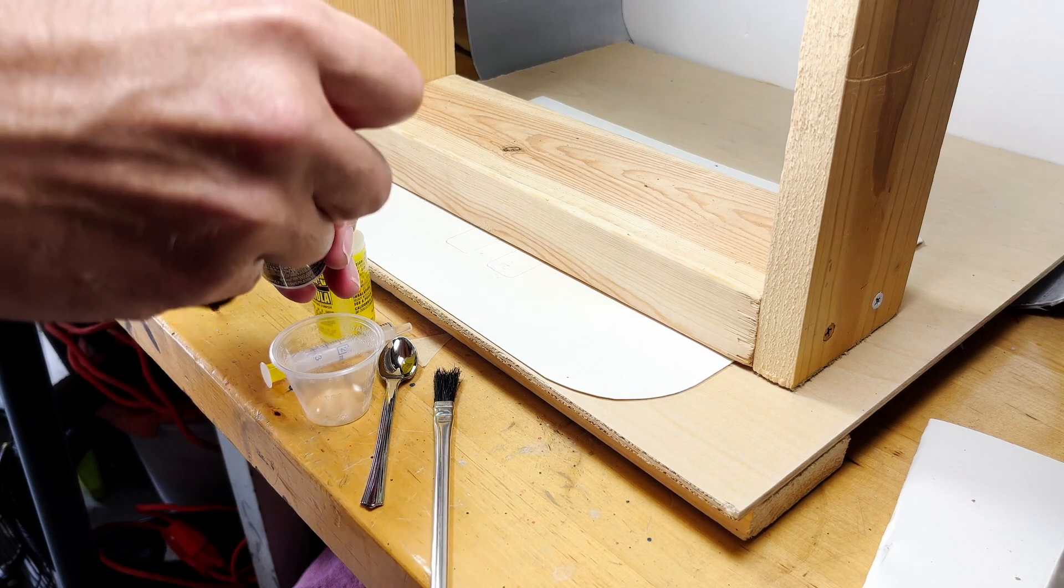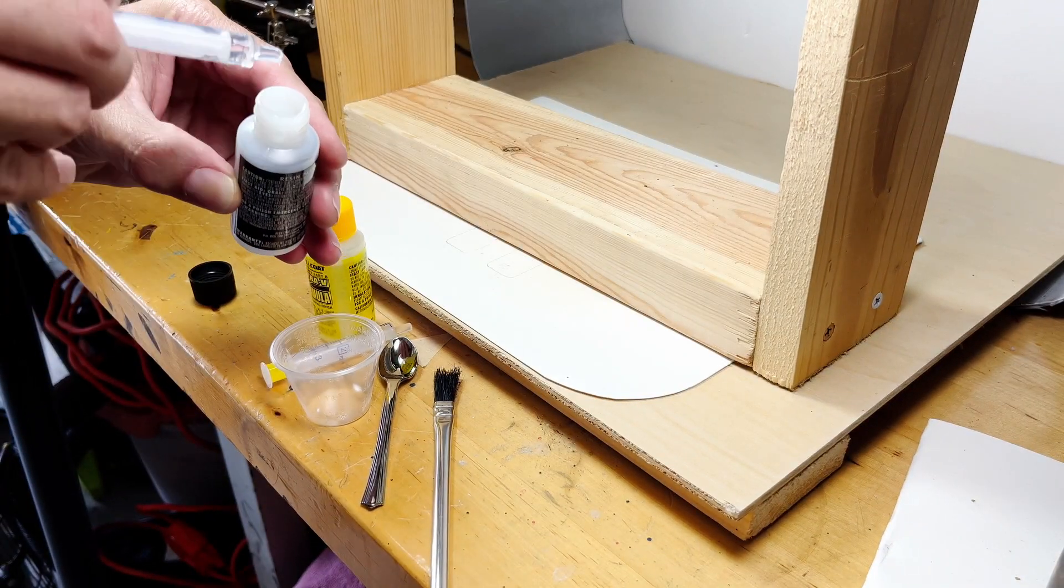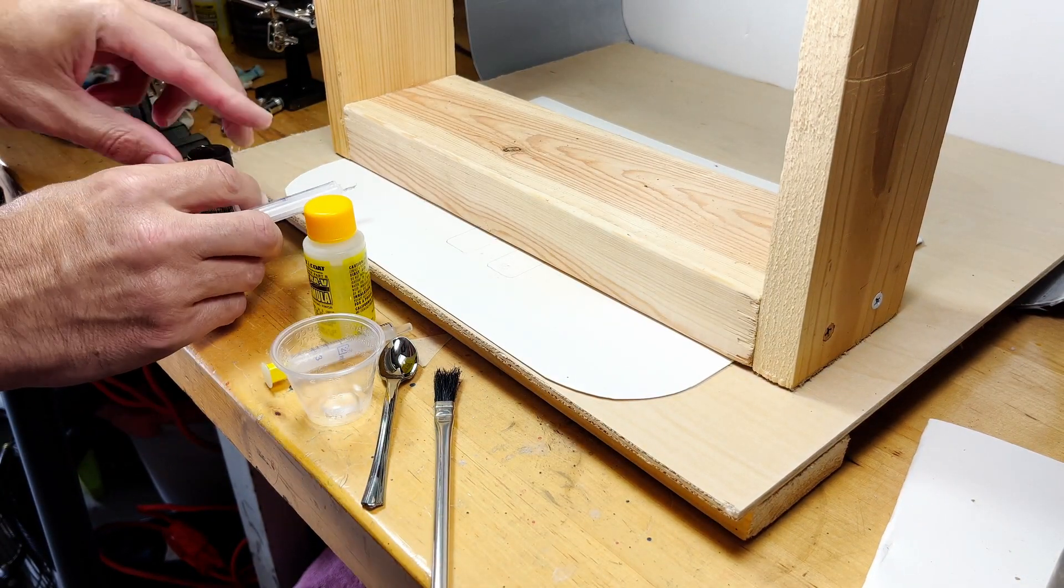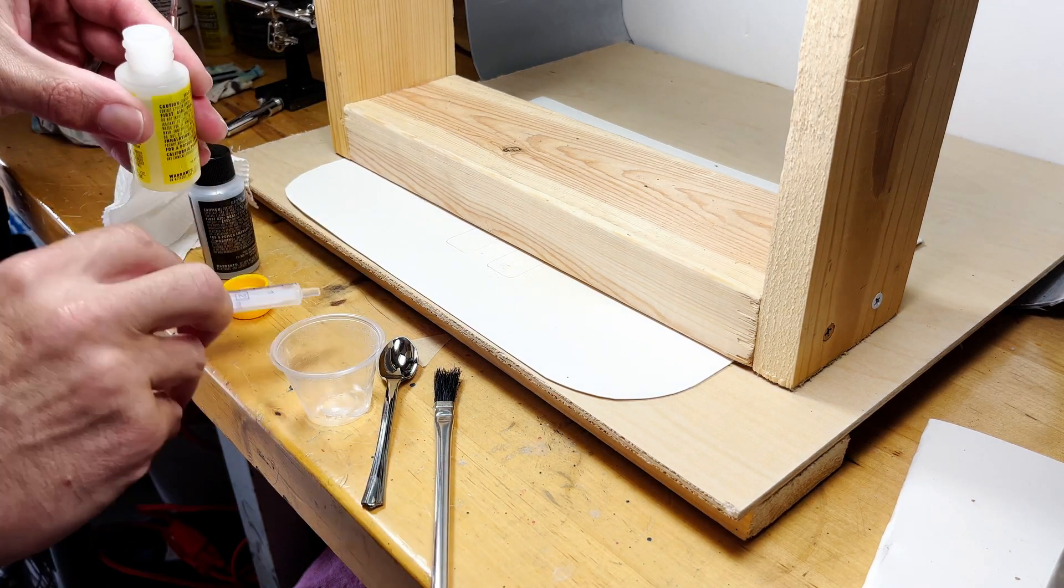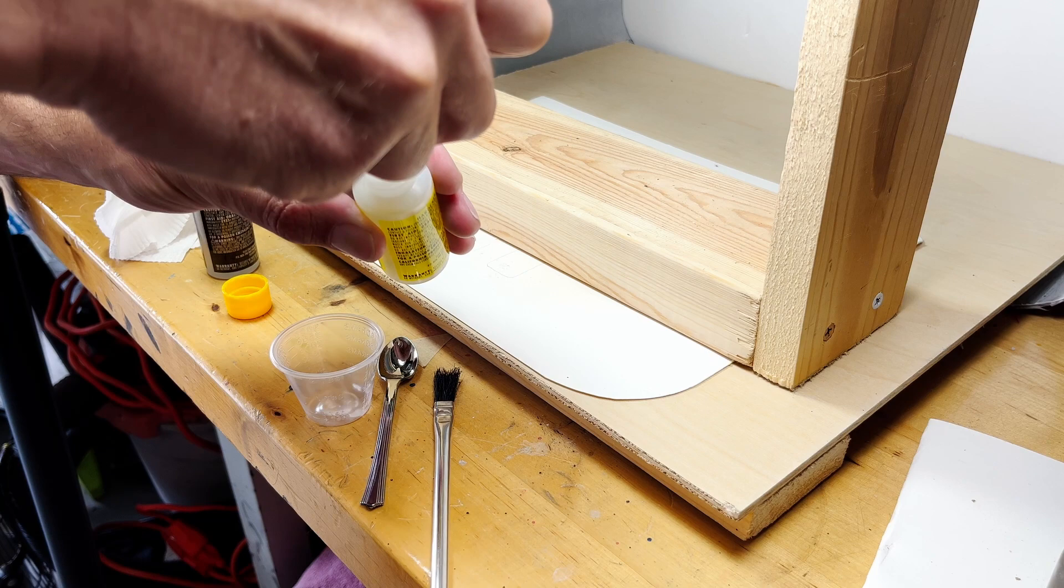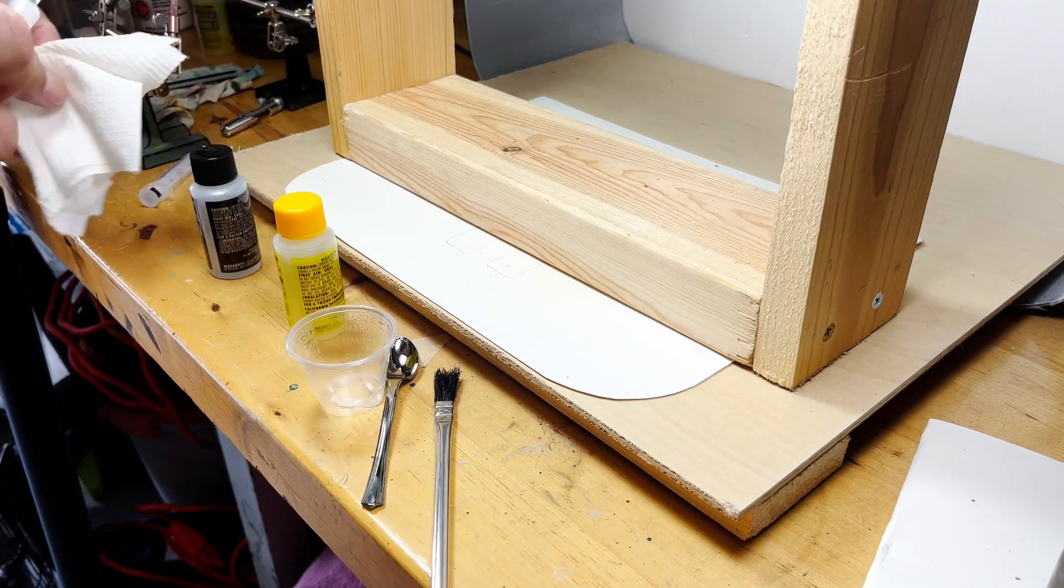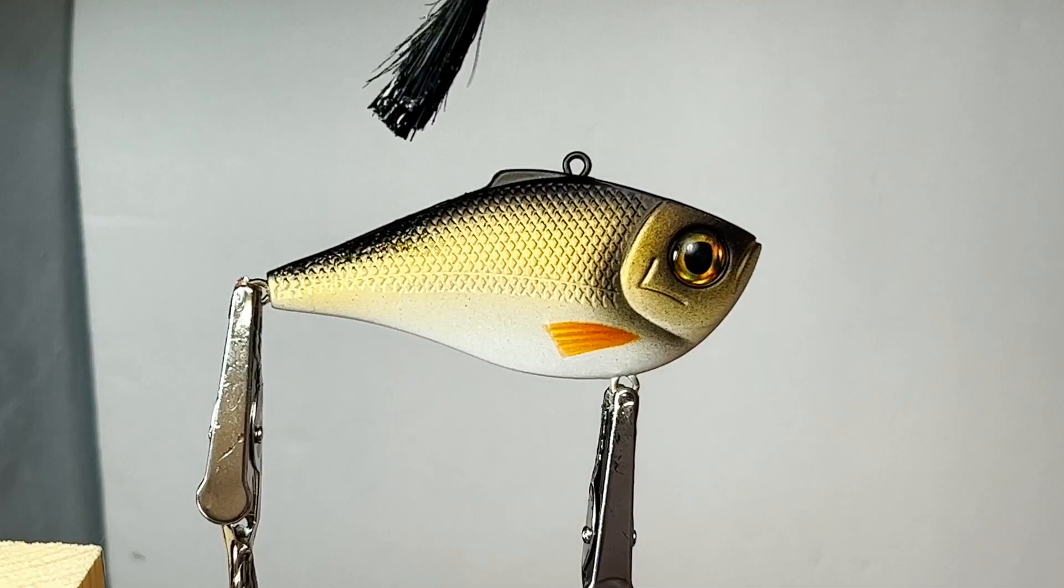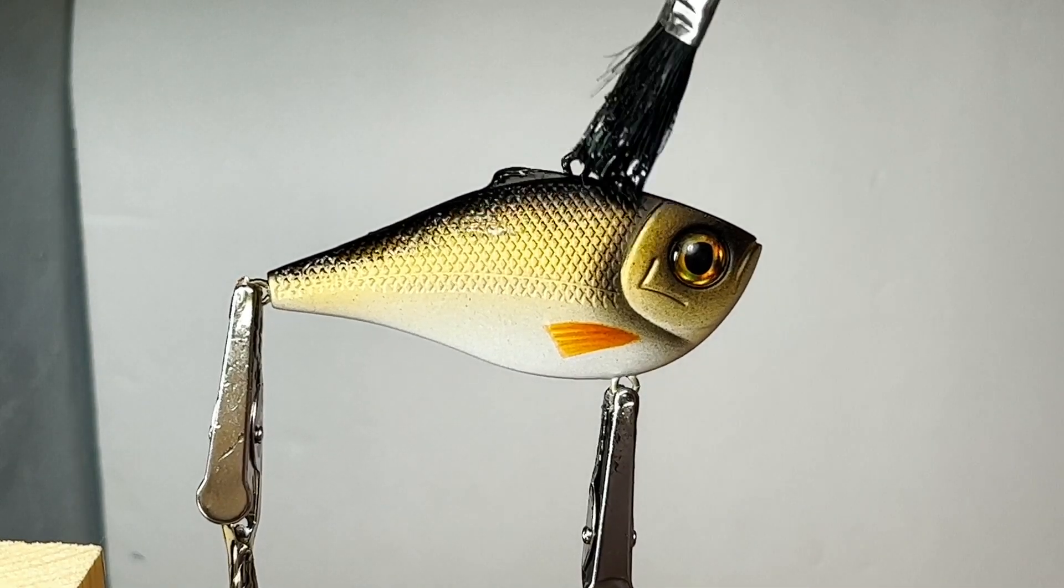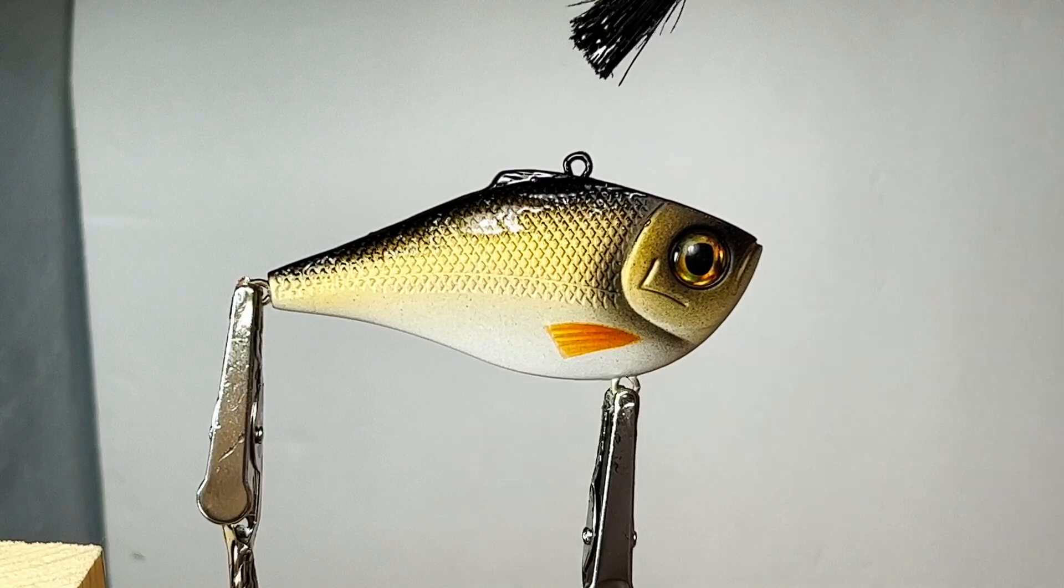I mix equal parts hardener and resin. I then mix them for about five minutes. I apply the clear coat and try to make sure I get it in every nook and cranny.